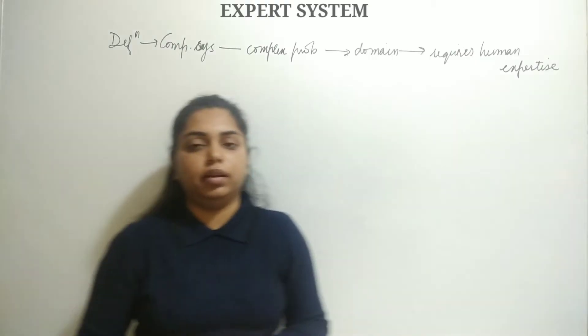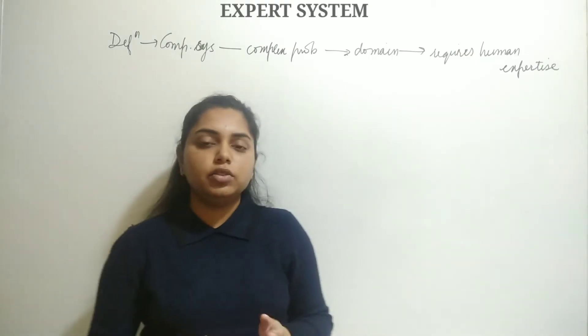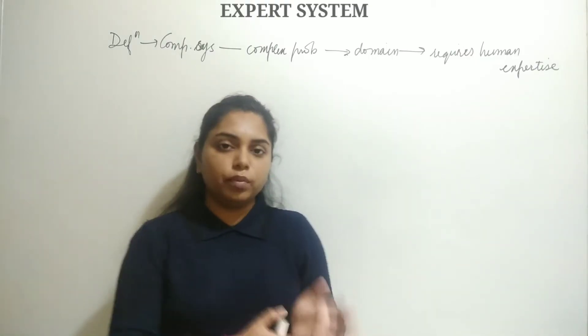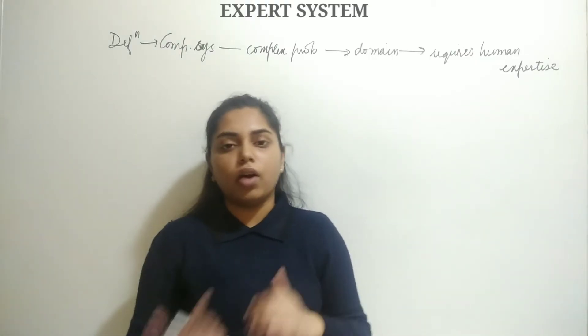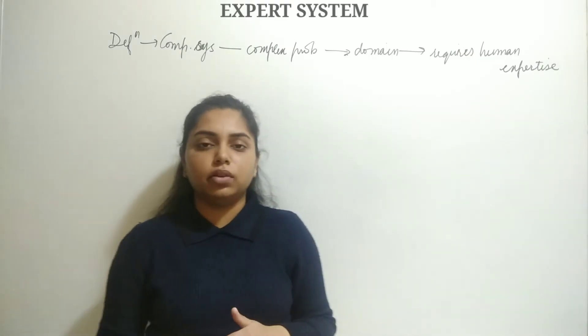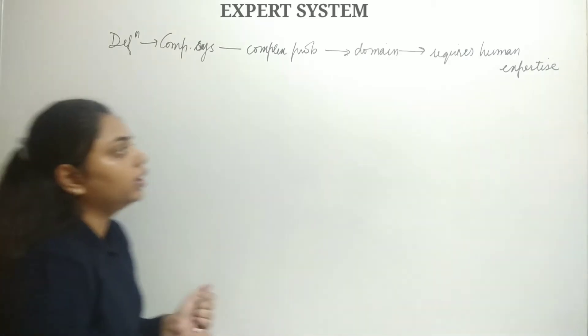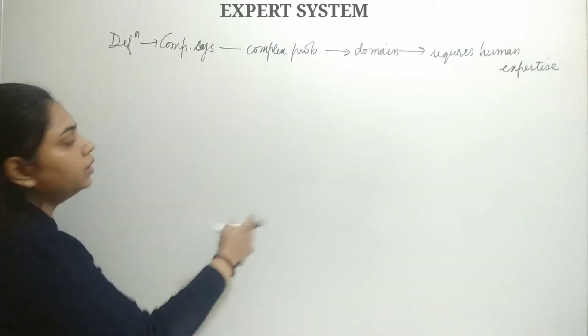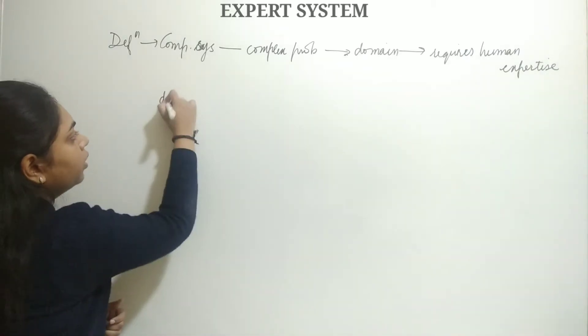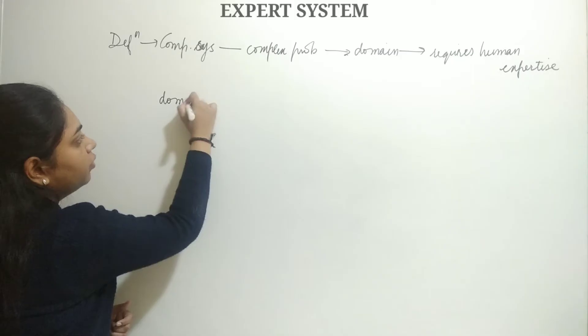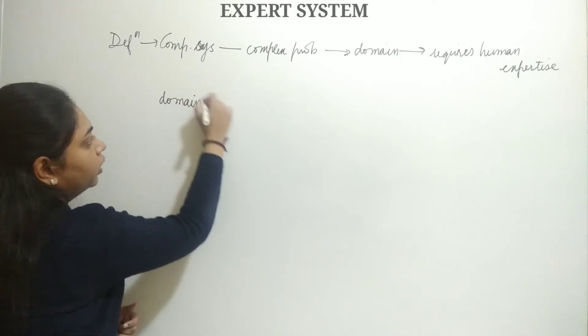Knowledge is of two types: domain specific knowledge and common sense knowledge. Expert systems make use of domain specific knowledge.